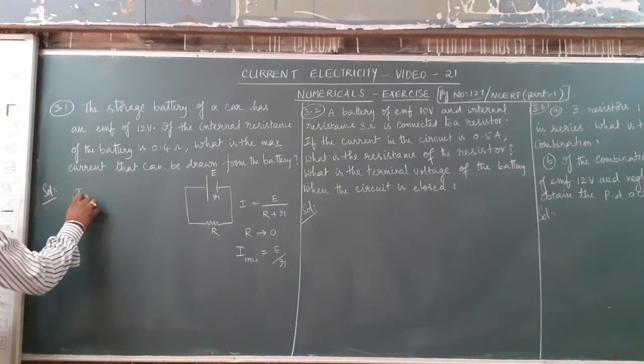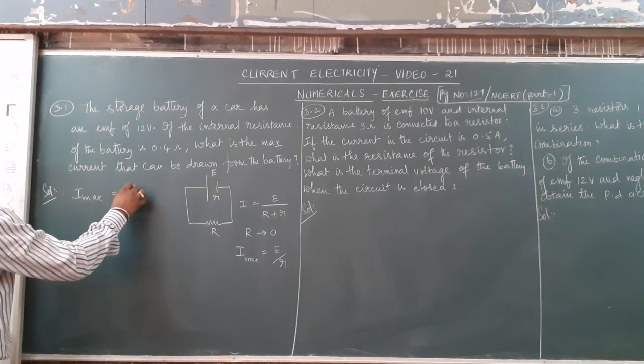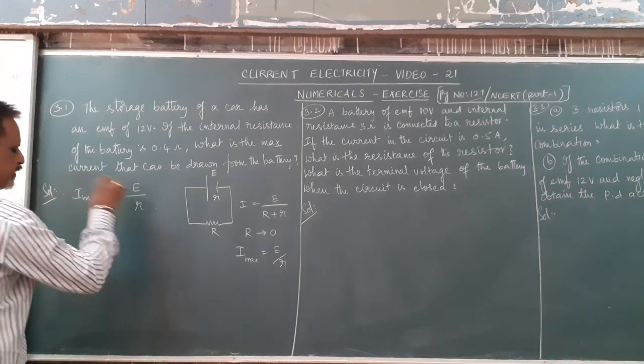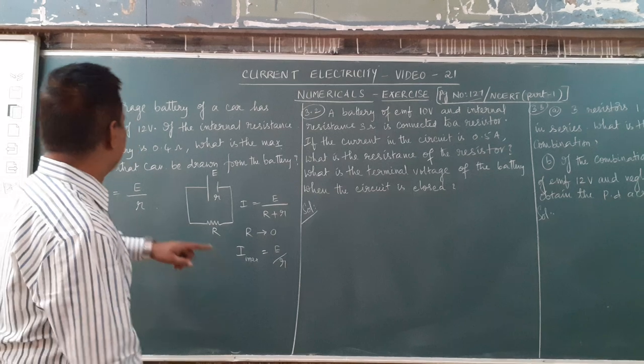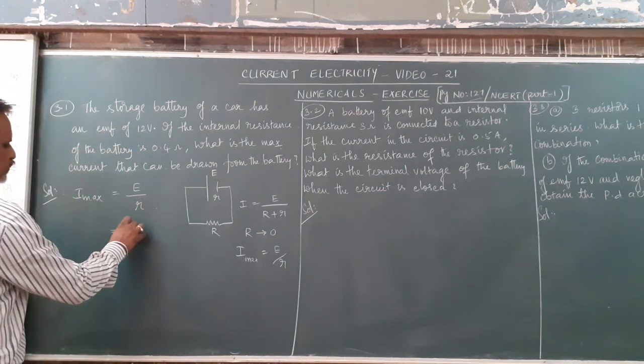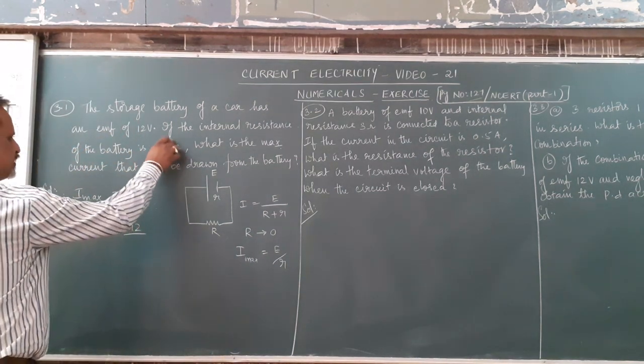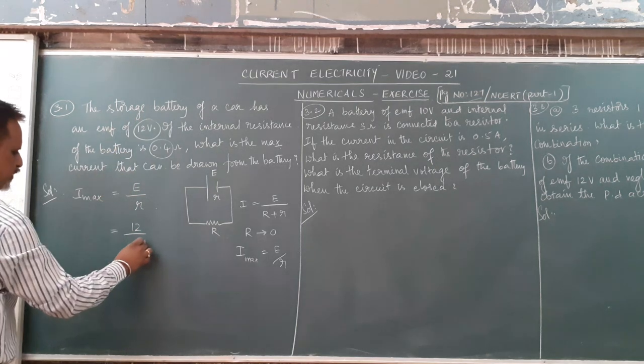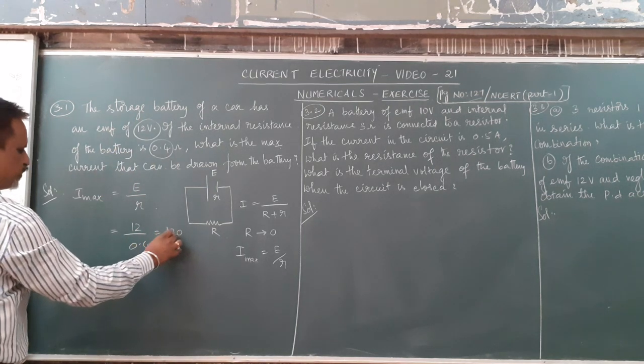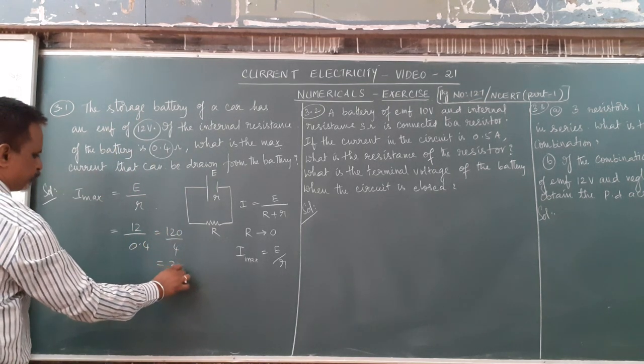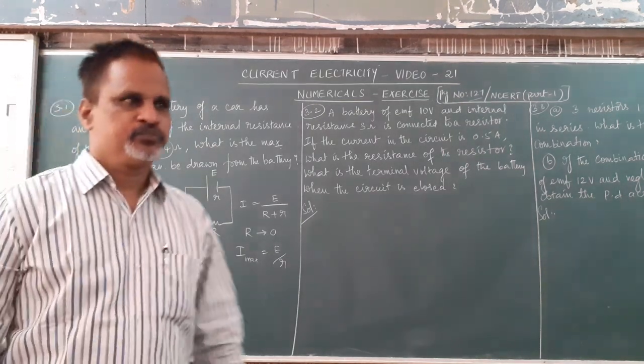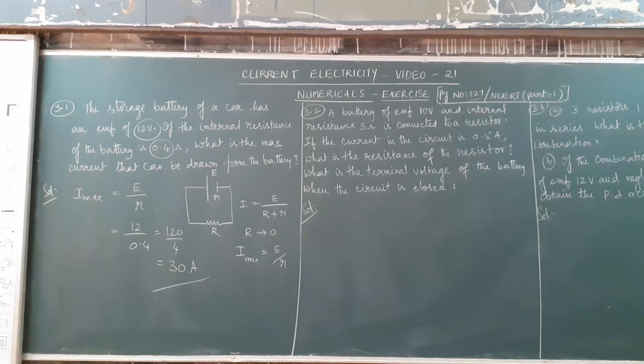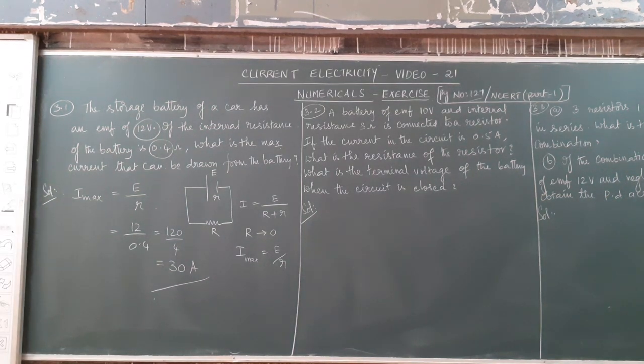The formula for Imax is equal to EMF of the cell by internal resistance. The EMF of the cell is 12 volt. 12 by internal resistance 0.4, which is 120 by 4, equals 30 ampere. So the maximum current will be 30 ampere.